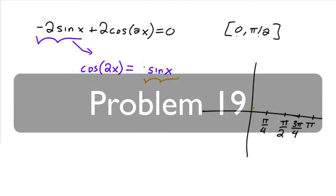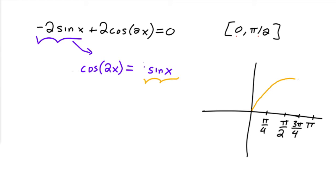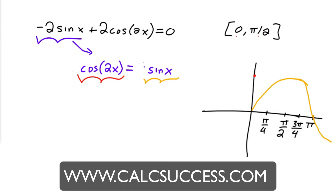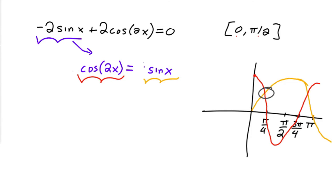Sine is going to look, the first half of it anyways, something like that, and it'll continue of course. And then cosine of 2x, this guy is going twice as fast. So it's going to start up here, and then it's going to go down, and then over here, and it's going to finish off right there. So from 0 to pi over 2, there's one intersection point, and it's right there.